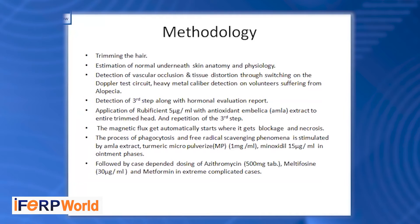AMLA can treat hair loss and helps in strengthening the hair follicles and reducing hair thinning. Importantly, AMLA helps reduce oxidative stress and free radicals. Next, at the third step, we detect vascular occlusion and tissue distortion by switching on the device. After the magnetic flux, it starts moving around the head and produces a sound wherever it finds any blockage or necrotic tissue, via the Doppler device. These drugs are also used for tissue distortion or hair follicles: azithromycin, metformin, and in extreme cases, melphalan.